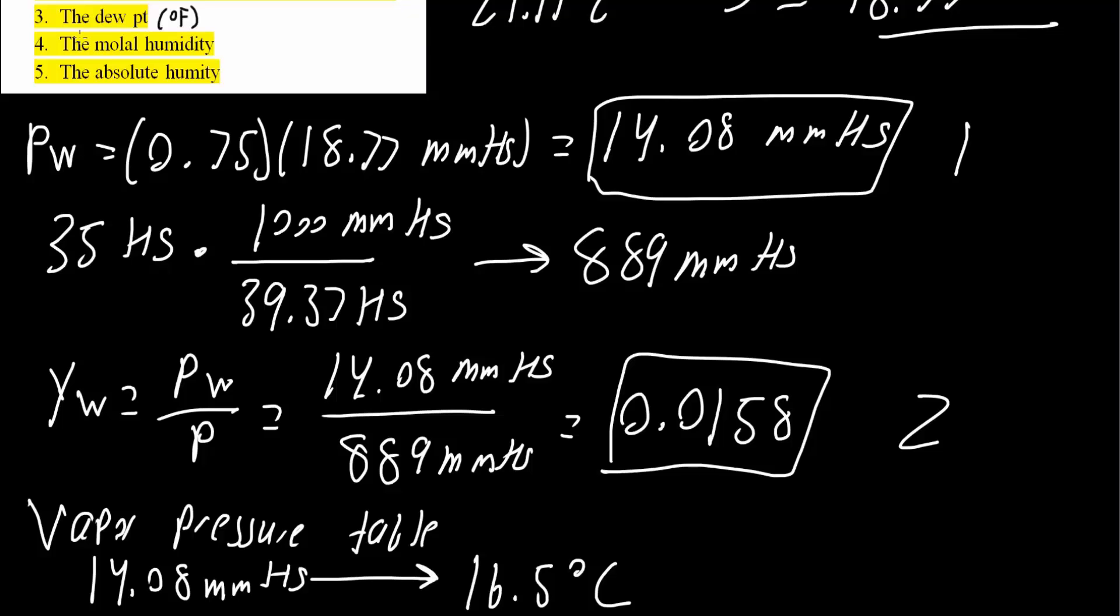We want to calculate dew point in degrees Fahrenheit. We have it in Celsius, so we need to change this into Fahrenheit. The conversion is: take 9 over 5, multiply it by what we have in Celsius, which is 16.5, and add 32. We get 61.7 degrees Fahrenheit. This is the third answer.